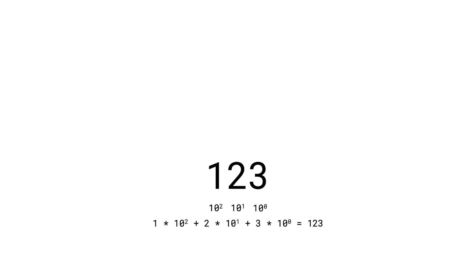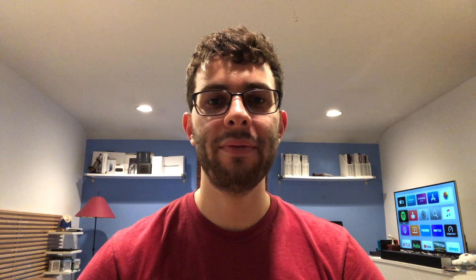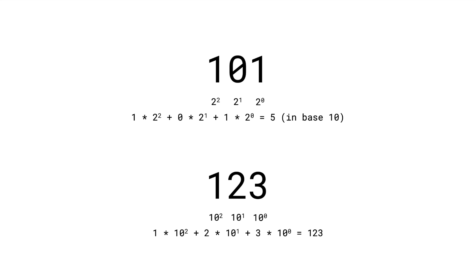As you probably know, computers work in binary. A bit, or binary digit, can take on the values of 0 or 1. Our everyday numbers are decimal or base 10 numbers, which means that we have 10 digits, 0 through 9, and each place value is a power of 10. For example, the number 123 is 1 times 10 squared plus 2 times 10 to the first plus 3 times 10 to the 0. We can do something similar with binary. Since binary is base 2, there are two possible values, 0 and 1, and each place value is a power of 2. So the binary number 101 has a value of 1 times 2 squared plus 0 times 2 to the first plus 1 times 2 to the 0, which is 5 in decimal.